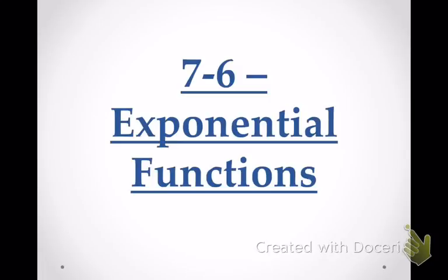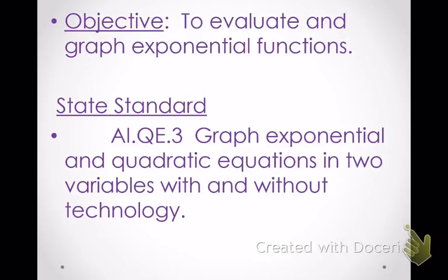We've been reviewing functions. A function is a machine that takes an input, does something with that input, and spits out a number we call an output. Inputs are x's — your domain. Outputs are your y's, or your range. Functions map those inputs to outputs, mapping your domain to your range, and that creates points that are part of the function. We're going to start talking about how to graph exponential functions today.